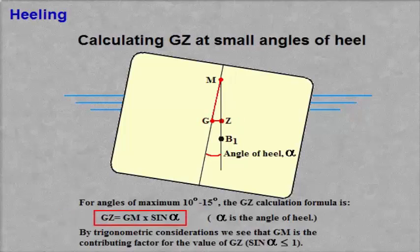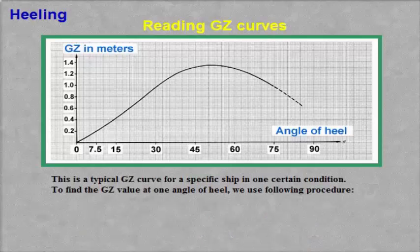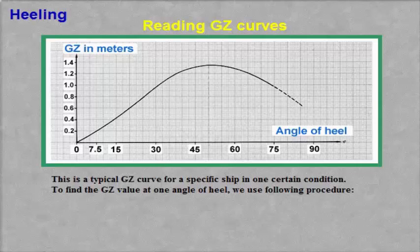How to calculate GZ at small angles of heel: This is a typical GZ curve for a specific ship in one certain condition. To find the GZ value at one angle of heel, we use the following procedure.